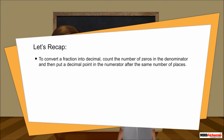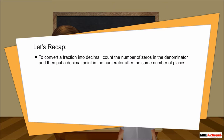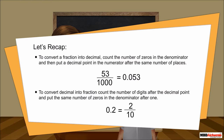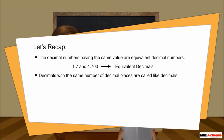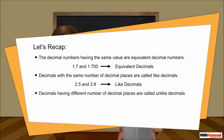Let's recap. To convert a fraction into decimal, count the number of zeros in the denominator and put a decimal point in the numerator after the same number of places from the rightmost digit. To convert a decimal into a fraction, count the digits after the decimal point and put the same number of zeros in the denominator after 1. Decimal numbers with the same value are equivalent decimals. Decimals with the same number of decimal places are called like decimals, and those with different numbers of decimal places are called unlike decimals.